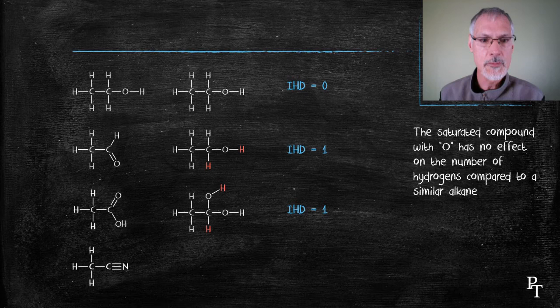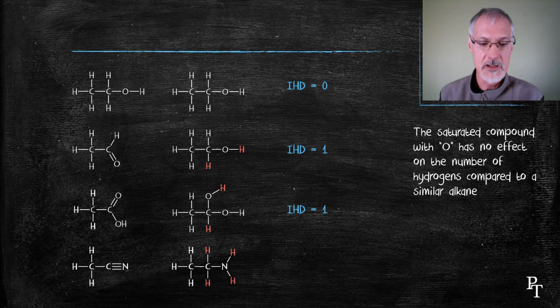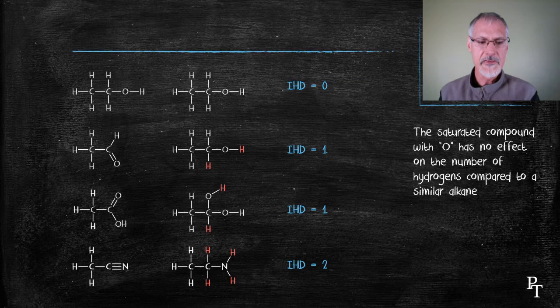If I add nitrogen to a molecule, such as the one down below, I have a triple bond that I need to break here. That's going to require four hydrogens to saturate that molecule, and hence its IHD is two.